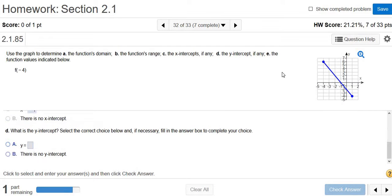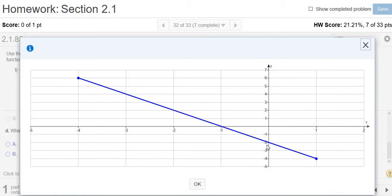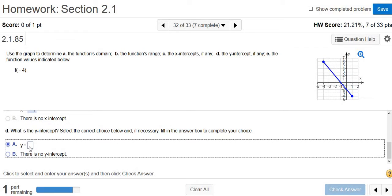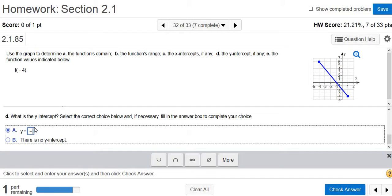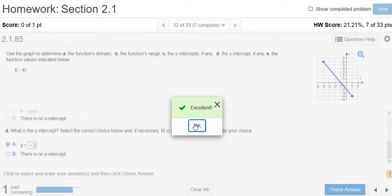The y-intercept is where the graph touches or crosses the y-axis. That's right here where my mouse is. That should be negative 2. That's the y-axis, the vertical one, and the graph crosses it at negative 2. So negative 2 is our y-intercept. Check answer.